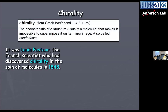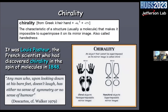Let's talk about chiral symmetry breaking and its role in QCD and hadron physics. Chirality is the characteristic of a structure that makes it impossible to superimpose it on its mirror image. People knew about chirality for a long time in molecules. There is an interesting saying that any man who, upon looking down at his bare feet, doesn't laugh has either no sense of symmetry or no sense of humor. These are chiral objects because they cannot be superimposed, and these are non-chiral objects which can be.